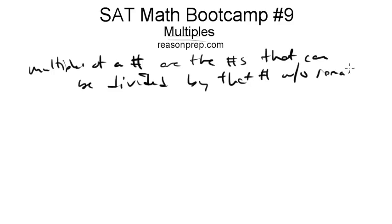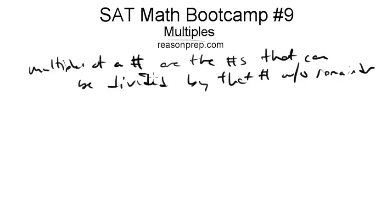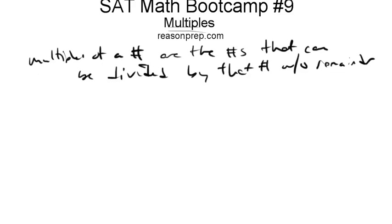In other words, they're factors of it. So the multiples of a number are the numbers that this number is a factor of — the numbers that can be divided by the original number without a remainder, in other words, the numbers in which this is a factor. Okay, whatever — that is confusing. Let me give you the really easy way to do it.